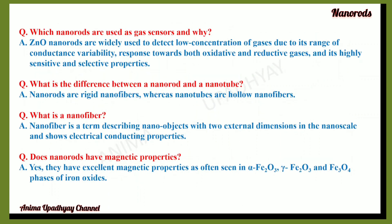Which nanorods are used as gas sensors and why? Zinc oxide nanorods are widely used to detect low concentrations of gases due to their range of conductance variability, response towards both oxidative and reductive gases, and their highly sensitive and selective properties.